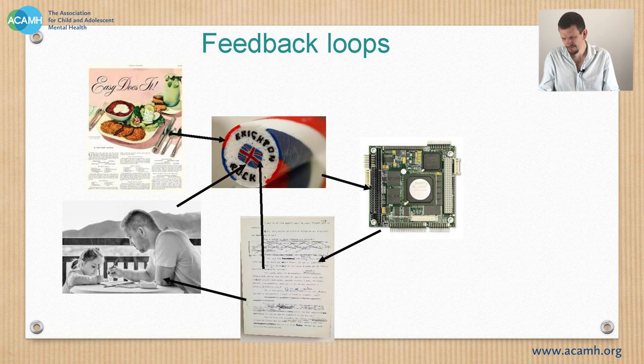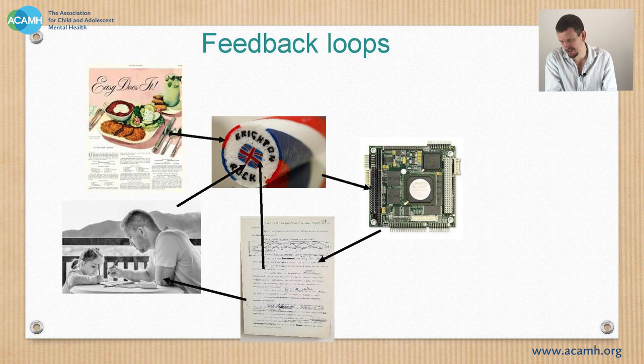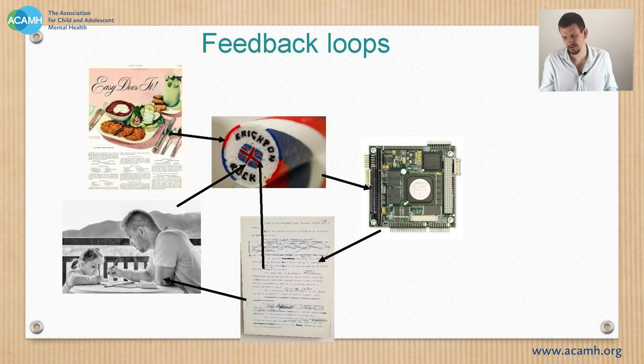Of course, you also have feedback loops, which make this much less of a linear process and much more of a complex and iterative one. The behaviours themselves form part of the environment — the responses of others form part of the environment — which is why we have a whole family section of the diagram. That feeds back into the brain and into the child's own psychology, and therefore into what we would call internal working models of how they respond to things and how they behave. So that's all quite theoretical, but it's an important baseline.